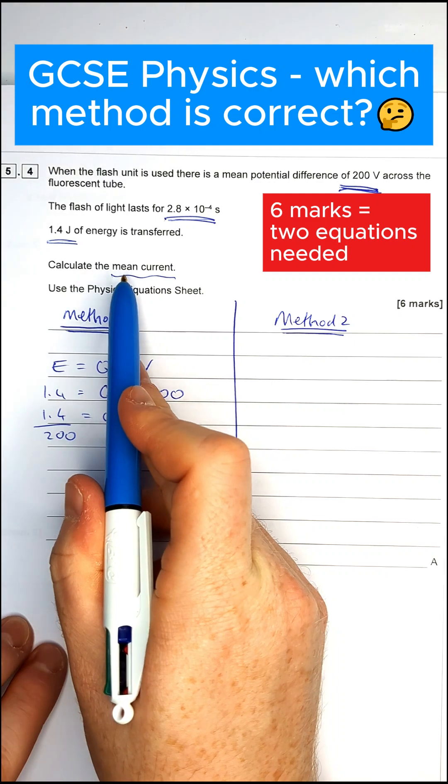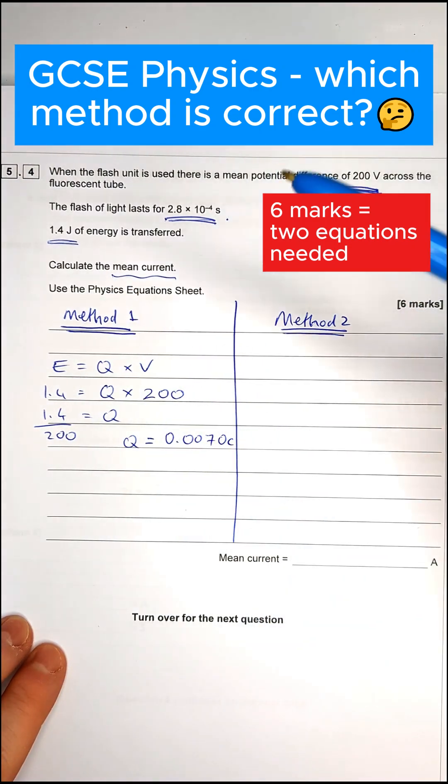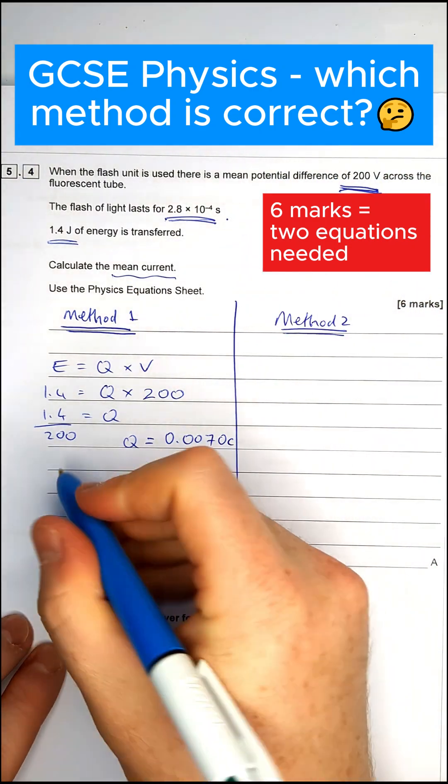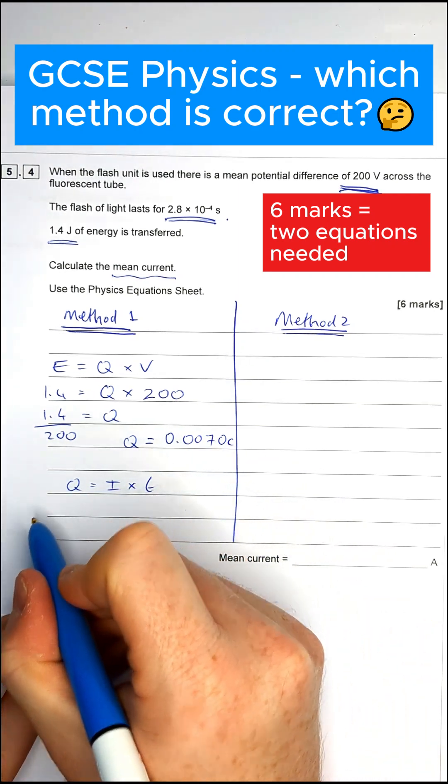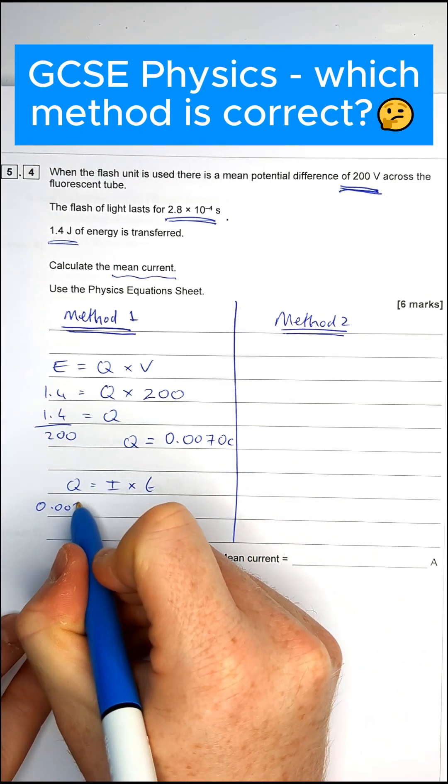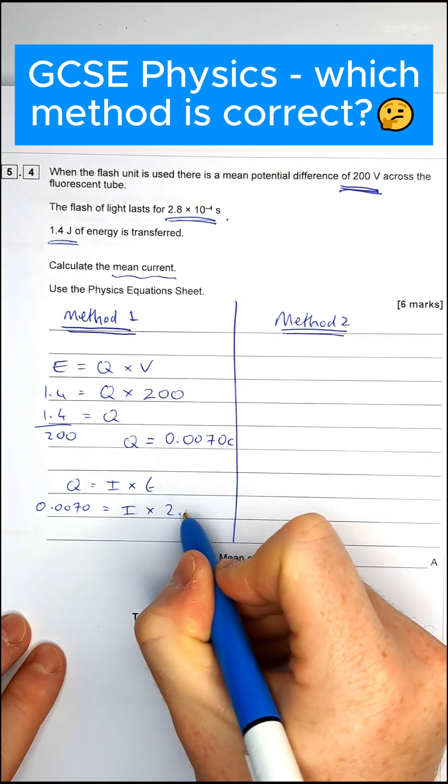Once we've got that, then to find the current, the only thing we haven't used yet is the time. So we're going to use the equation charge equals current times by time. Plug in our value for charge, which is 0.007, equals the current, multiplied by our time.